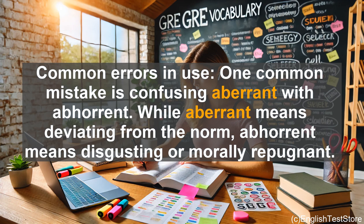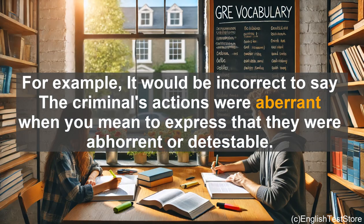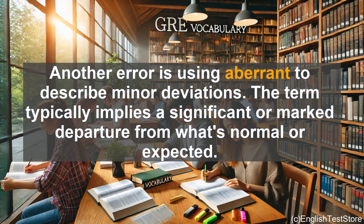One common mistake is confusing aberrant with abhorrent. While aberrant means deviating from the norm, abhorrent means disgusting or morally repugnant. For example, it would be incorrect to say the criminal's actions were aberrant when you mean to express that they were abhorrent or detestable.